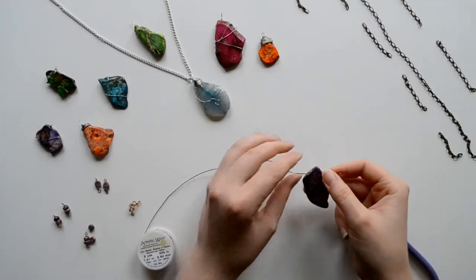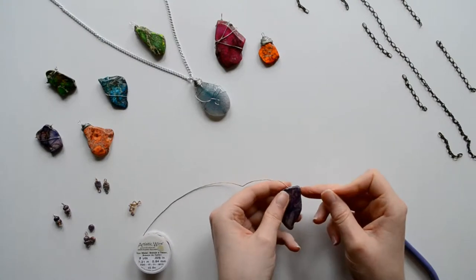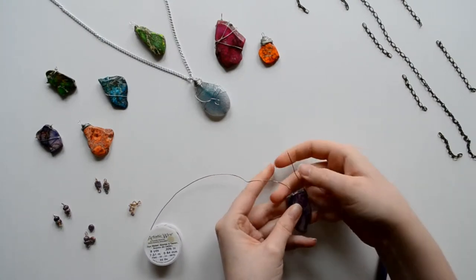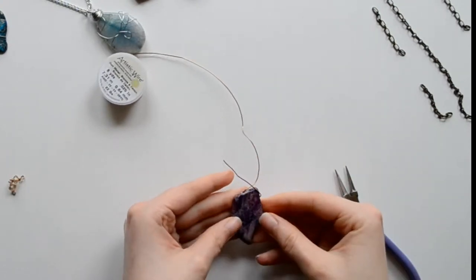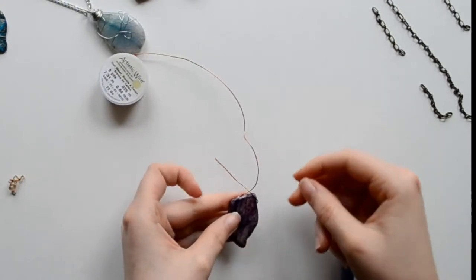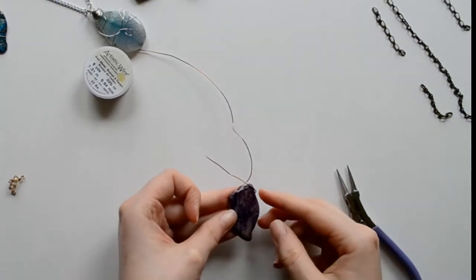So now I'm starting out with a 22-gauge wire and I am stringing it through my large bead. Alright, so now you're going to form a short side and a long side.